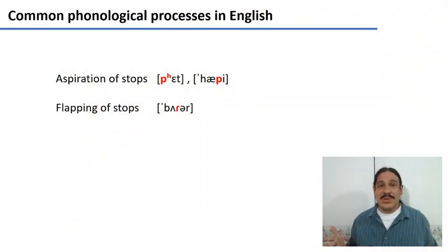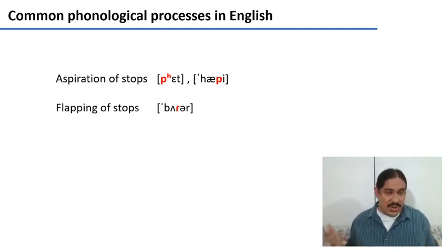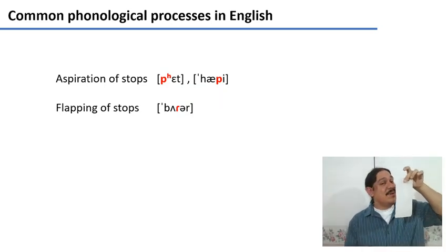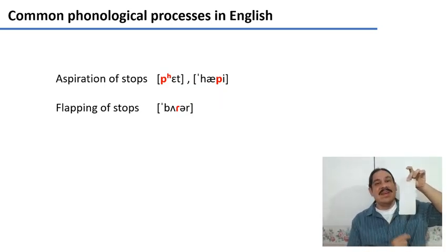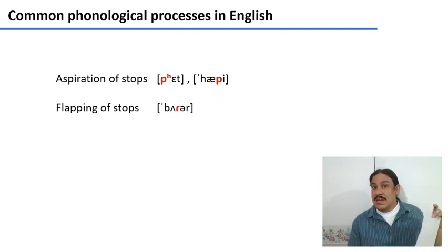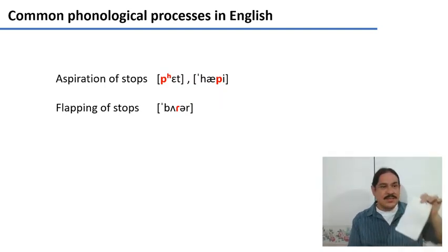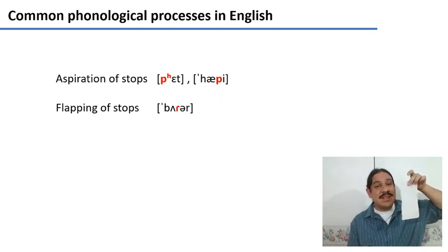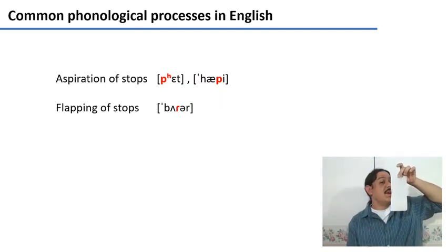We've been talking about aspiration since the beginning of the week. In English, there are some stops that have very strong puffs of air, as in 'pet' for example, and there are some words that don't have that puff of air, like 'spot.' Same P, two very different effects: 'pat' versus 'spot.' But we have neglected to mention some examples like 'happy' — no puff.